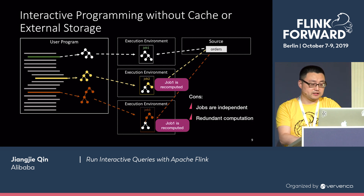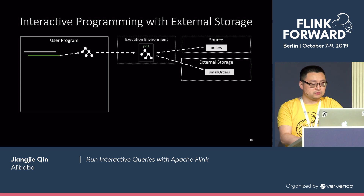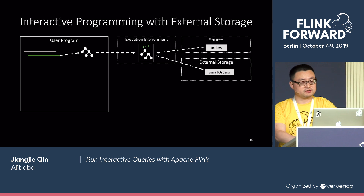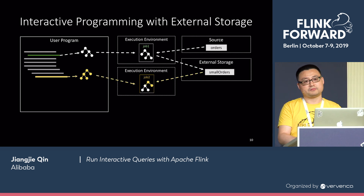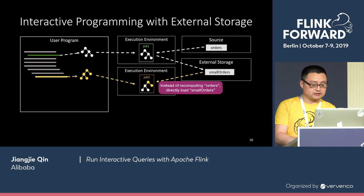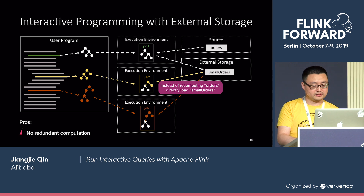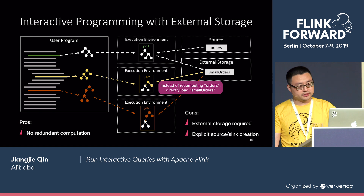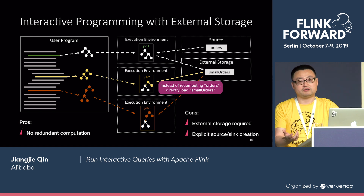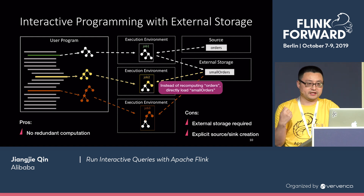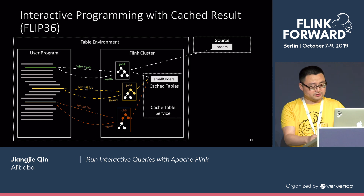One way to solve this is to introduce external storage to save the result of the first job. What a user can do is submit a job and output the result — small orders — into external storage. For the second job, read from there and do the processing. Now I don't need to recompute small orders again because it's already saved in external storage. And for the third job, I can do the same. The pros of this is that there's no redundant computation anymore. However, I need external storage, and I also need to explicitly write all the sources and sinks to save intermediate results and load them back in later usage.